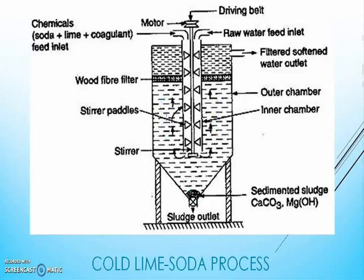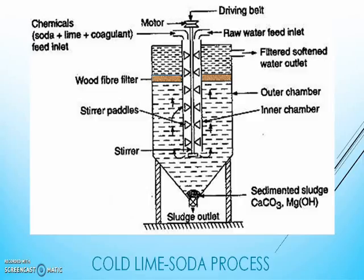As the water level goes up slowly, softened water passes through a wood fiber filter to remove sludge completely, and through the outlet at the top we will get filtered soft water.